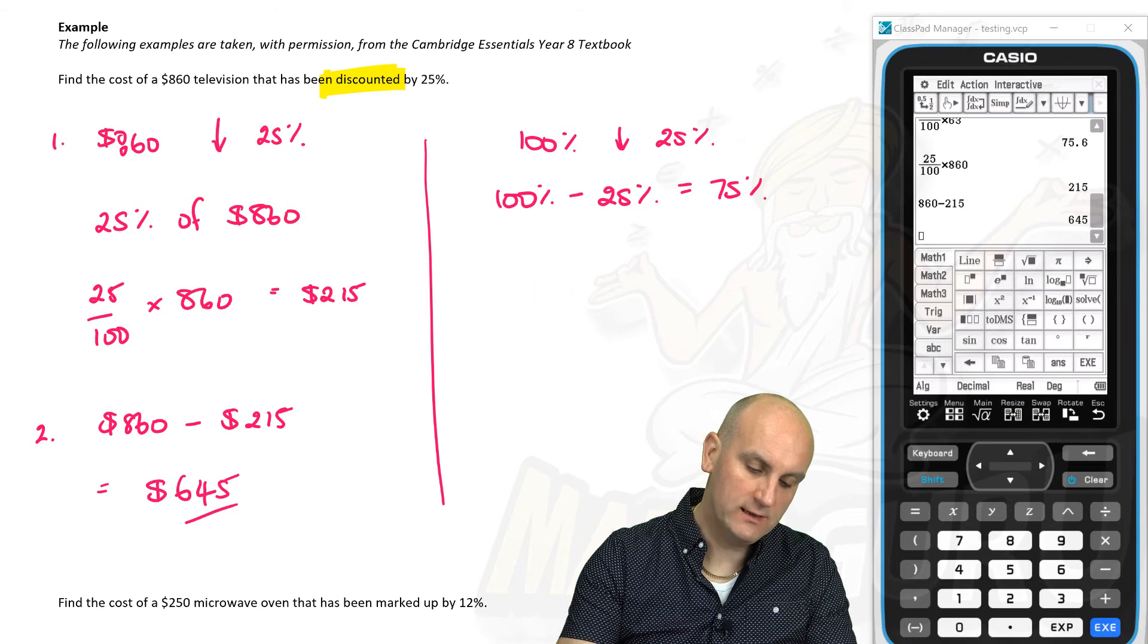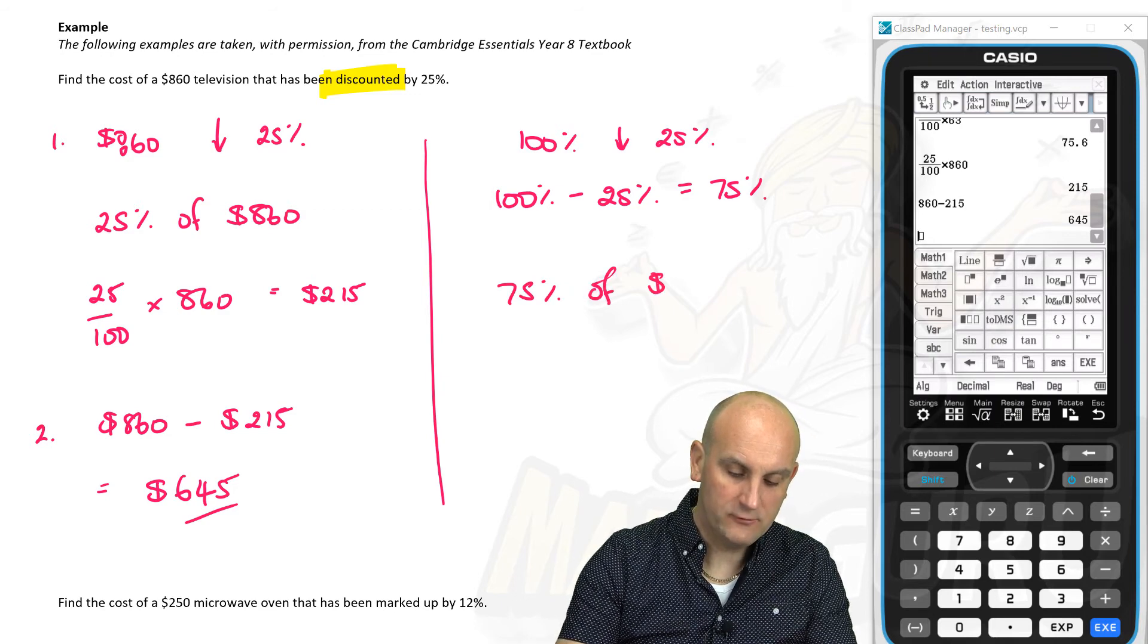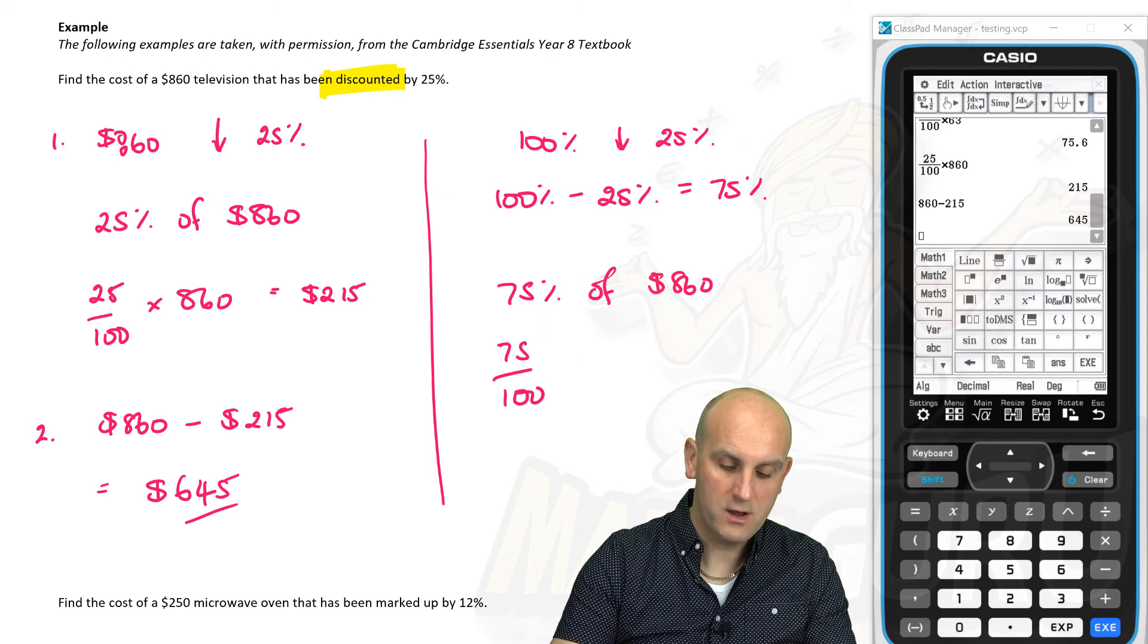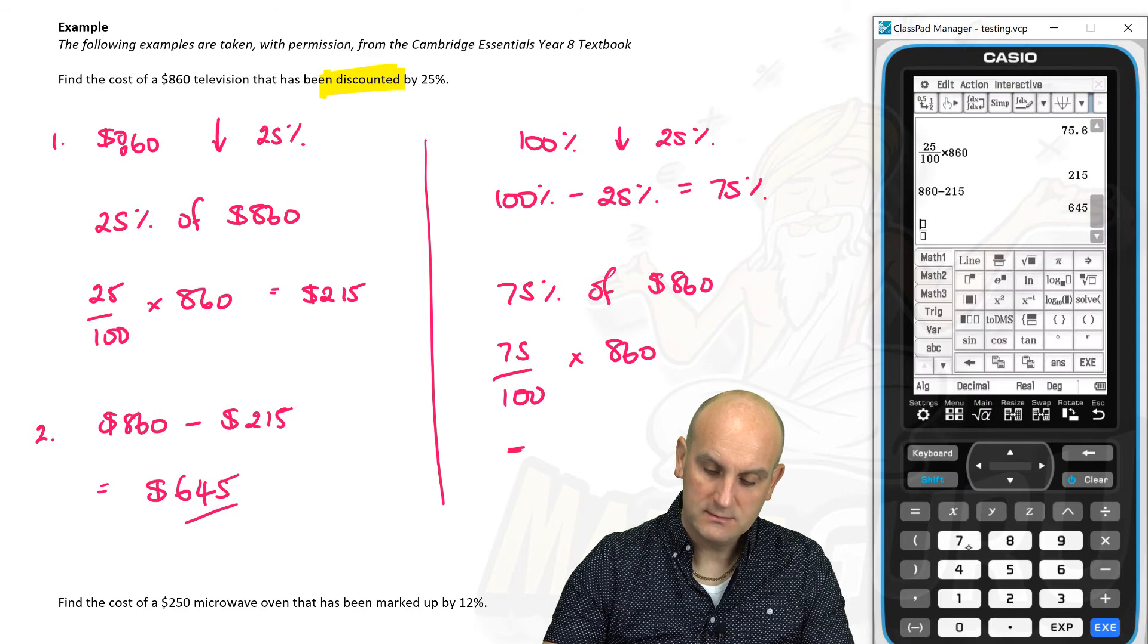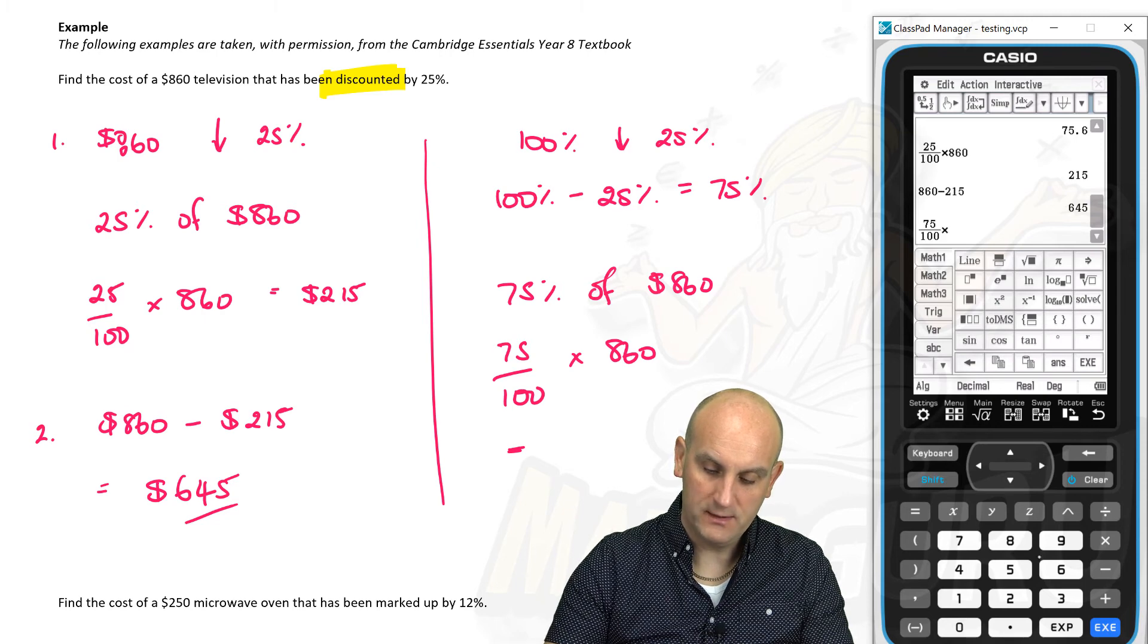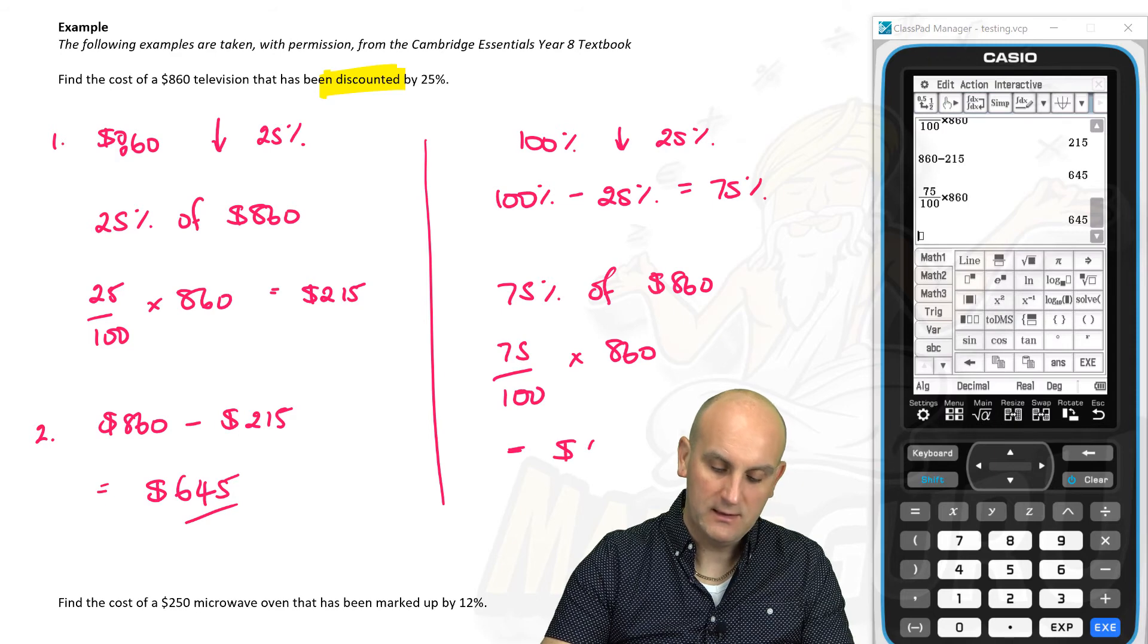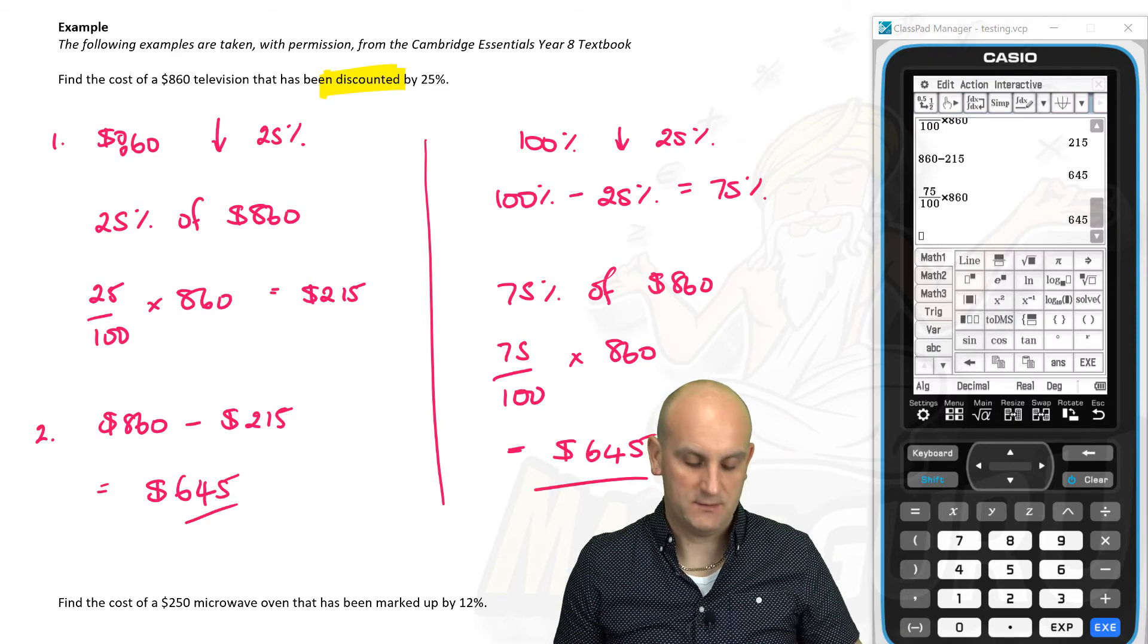So we've got $860. And I want, let's try that one again. I want 75% of $860. Well, I can do that. 75 over 100 times 860 gives me 75 over 100 times by 860 gives me the staggering value of $645, straight to my answer, just by thinking about percentages.